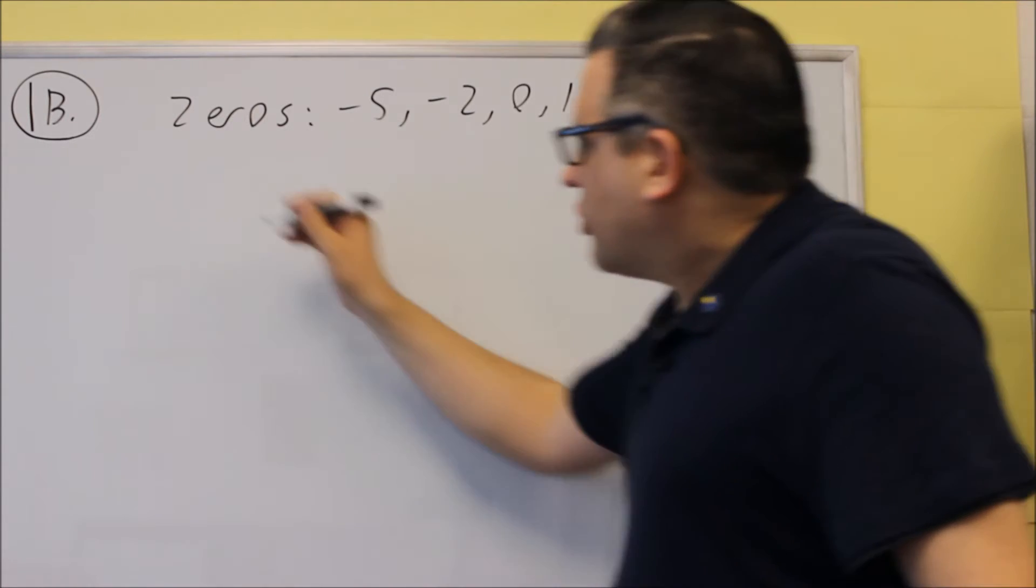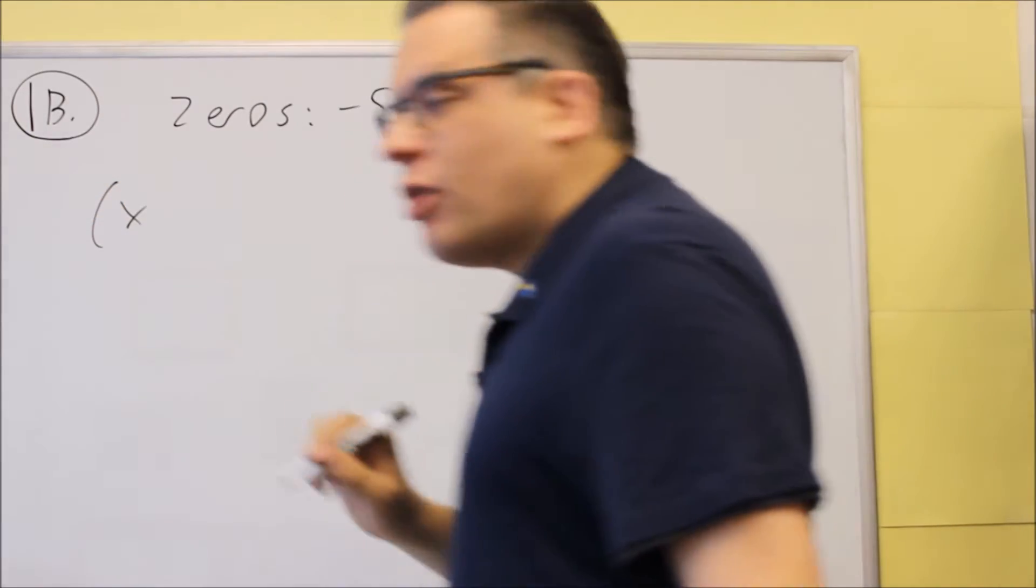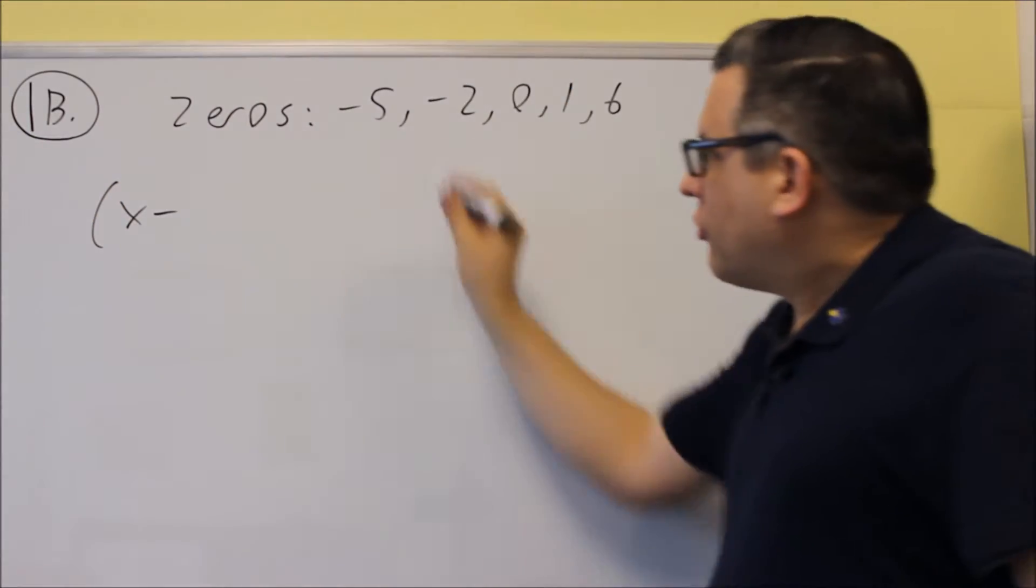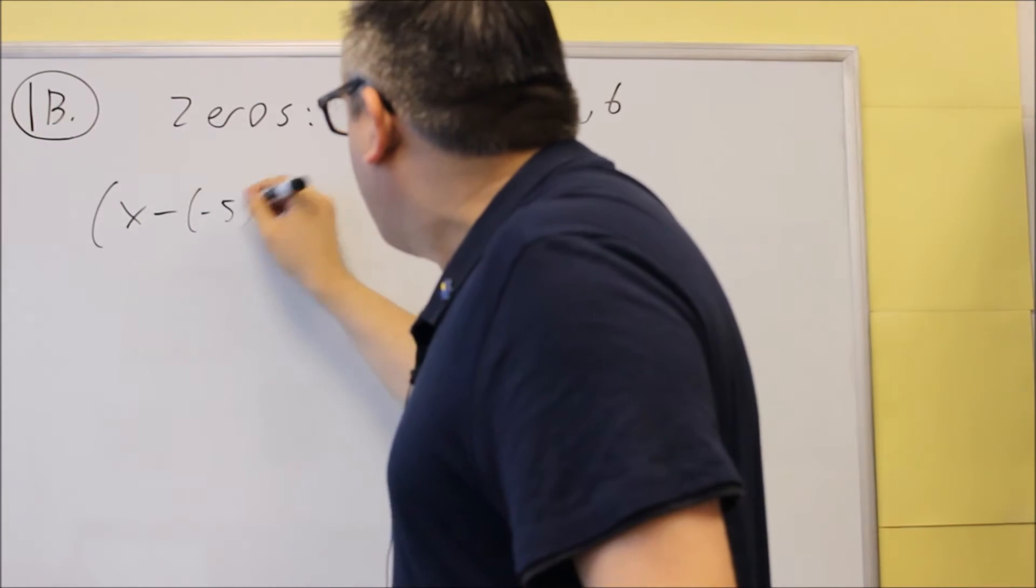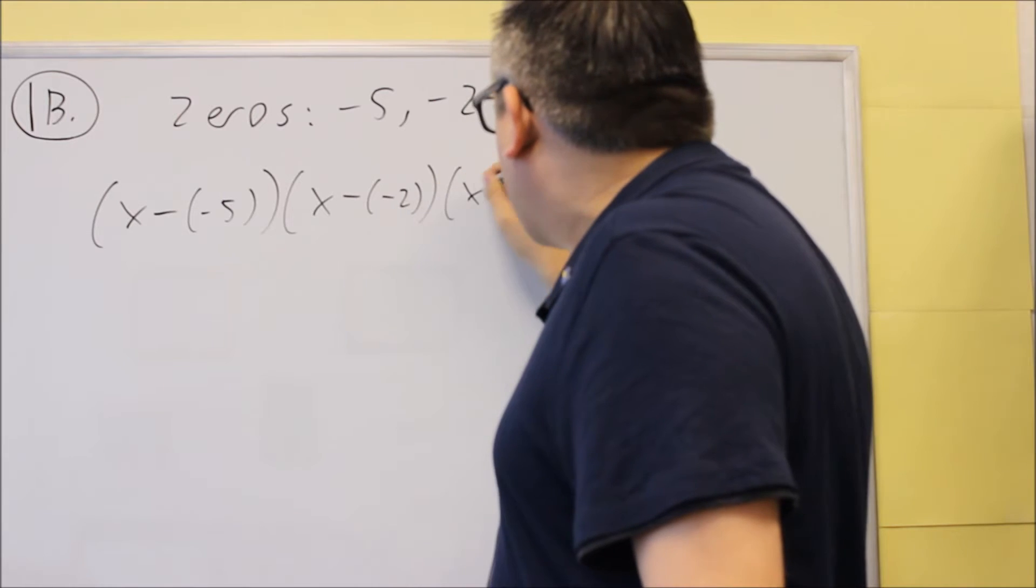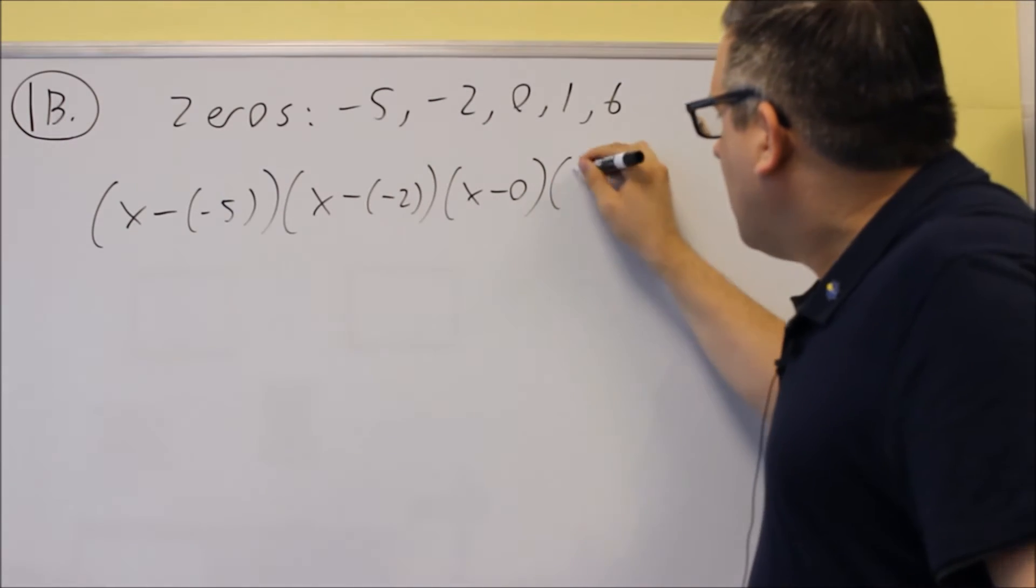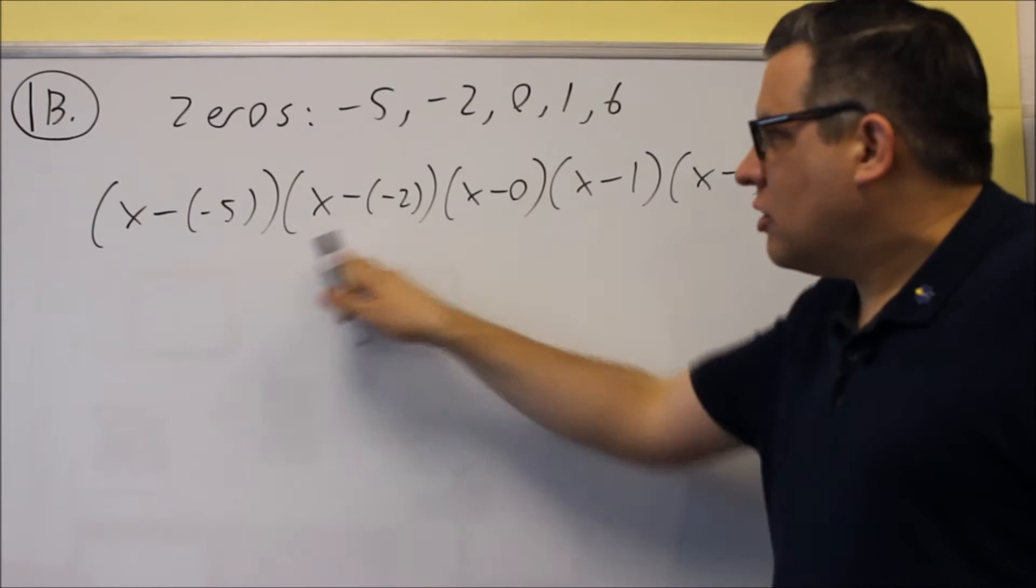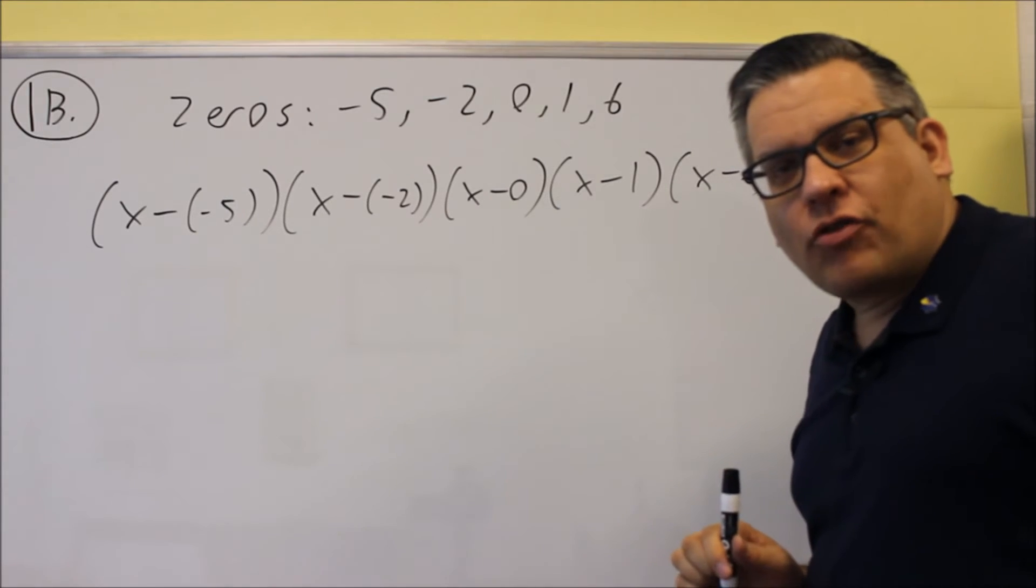For this one, we're still going to start with the same procedure. We're going to do x minus whatever each of the zeros are. So we'll start with x minus negative 5, x minus negative 2, x minus 0, x minus 1, and x minus 6. That's the formula you would use for all that.